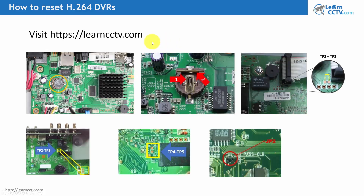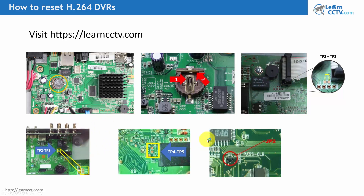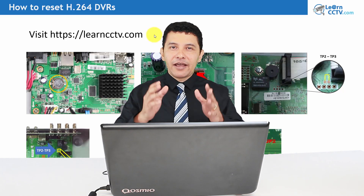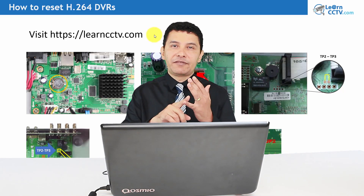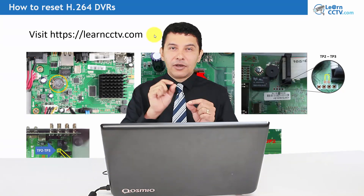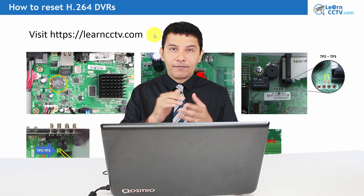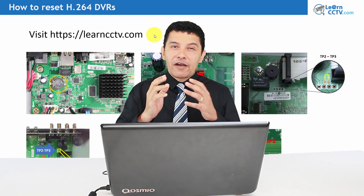There is also an option to physically reset your DVR, like removing the battery or shorting some pins on the board. If your DVR has pins like this, you use a tweezer to close them, short-circuiting the board to reset the password. You can find an article at learncctv.com explaining everything: how to use the password generators, how to download them, and also how to use a tweezer to reset certain DVR models. You just need to try every available option.